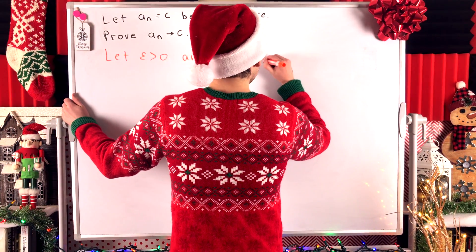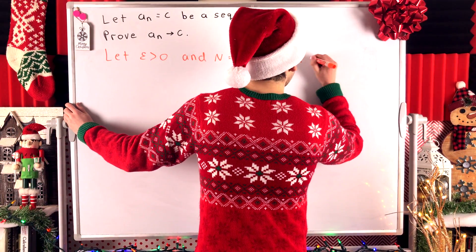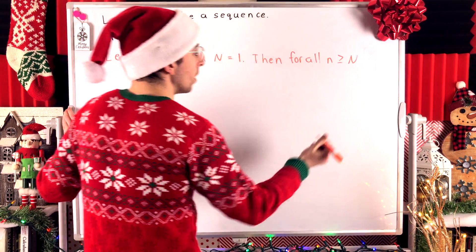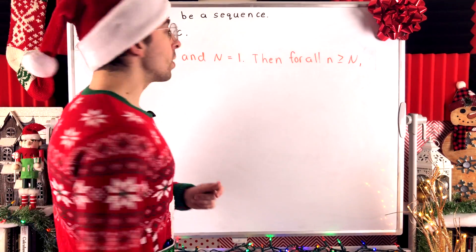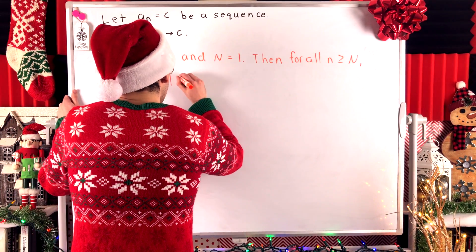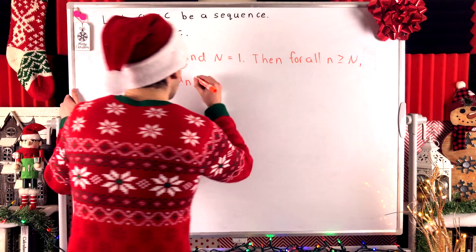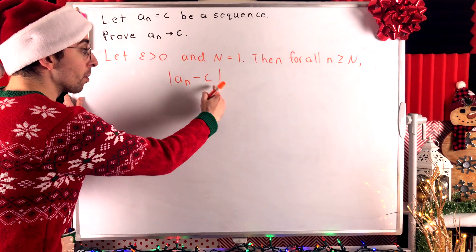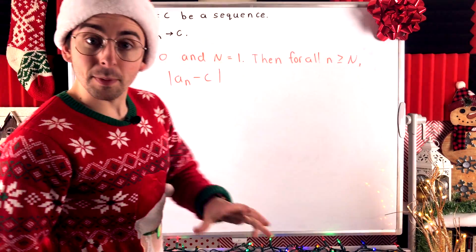Then for all little n — basically saying for all terms of our sequence — for all little n greater than or equal to big N, we want to show that the terms of our sequence a_n are within epsilon of the limit C. To represent the distance between the terms of our sequence and the claimed limit C, we write the absolute value of a_n minus C. The end goal is to show that this is less than epsilon.